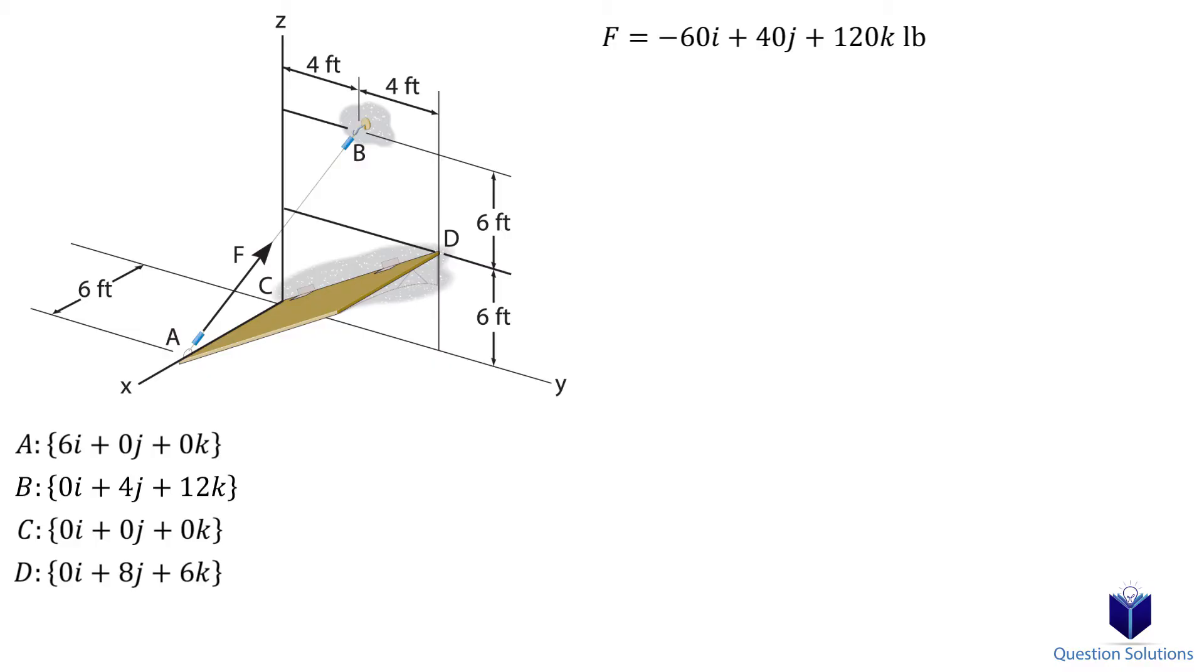Now we need to write the axis where we calculate the moment as a unit vector, which is axis CD. To do that, we need to do almost everything we just did all over again. So we need a position vector from C to D. Our position vector CD is 0i + 8j + 6k.